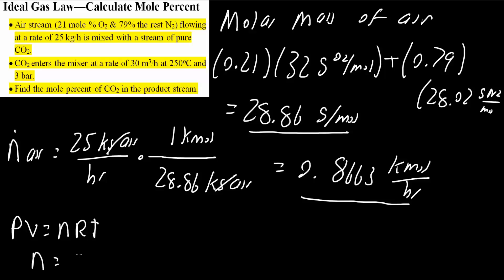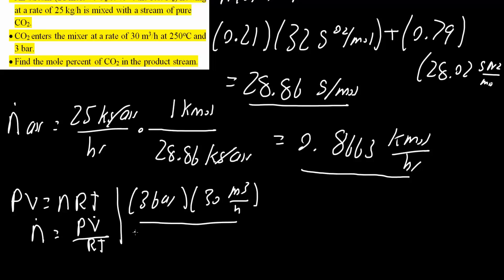We could say that n equals PV divided by RT. So pressure was 3 bars. The volumetric flow rate was 30 meter cubed per hour. We will divide by R, which is 8.314 meters cubed times kilopascals divided by kilomoles times K, times temperature. We have 250 degrees Celsius, but we want Kelvin. So we can say 273.15 plus 250, and we would get Kelvin. Now let's check our units.